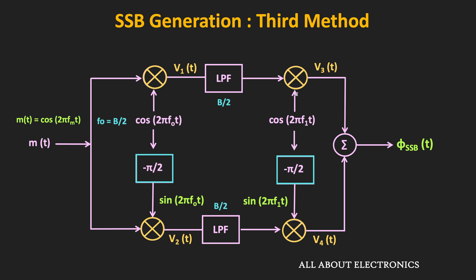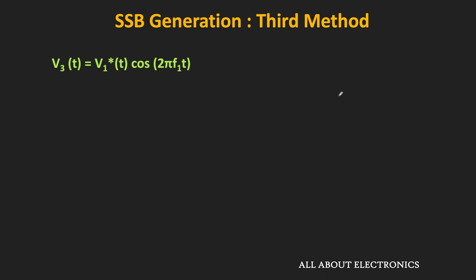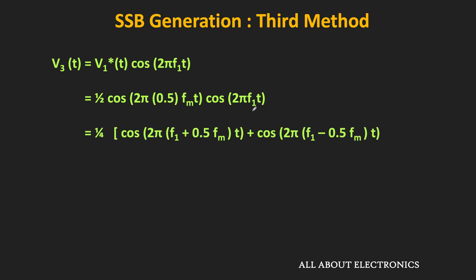This signal V1*(t) is multiplied with cos(2πF1t) to give signal V3(t). So V3(t) = V1*(t) · cos(2πF1t) = 0.5 · cos(2π·0.5Fm·t) · cos(2πF1t). Once again using the cosine product identity, we get two terms: one with addition of the two frequency components (F1 + 0.5Fm) and one with subtraction (F1 − 0.5Fm).